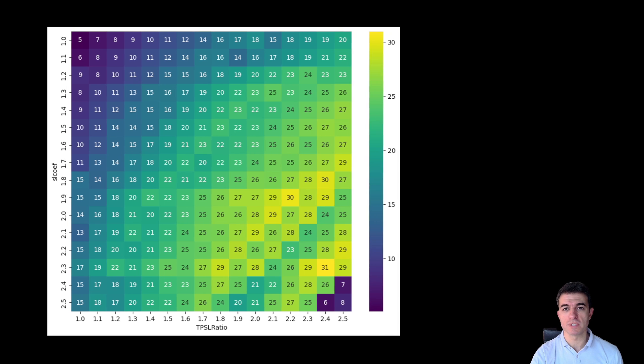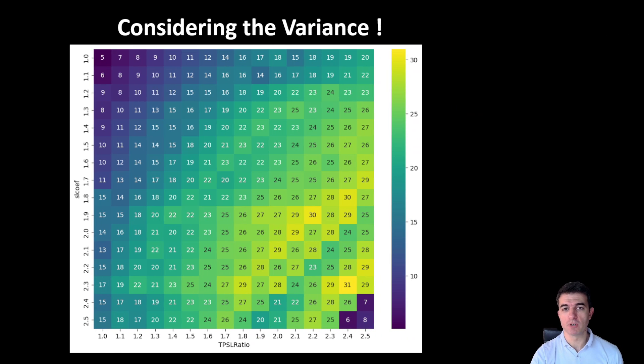Another point we might want to consider is the variance. If we look at all these tests, we can see that the transition between the different values of returns is not very sharp. So there's a smooth transition between one set of parameters and another close set of parameters. So the variance is relatively small.